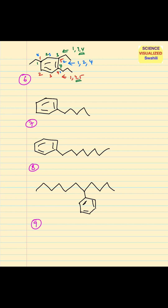If you look at position number one, this group has three carbons — one, two, three — so that's a propyl group. Position number two has two carbons, so that becomes an ethyl group. And the last one here, position number four, that's also another ethyl group.